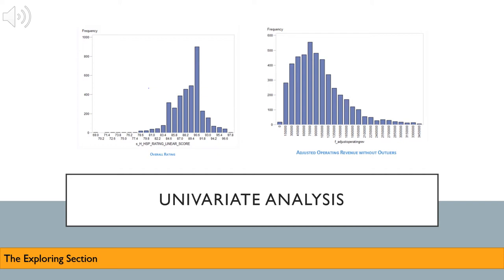In our exploring section, we looked at univariate analysis and bivariate analysis in order to come up with some hypotheses to use for our testing section. So based on our chosen hypothesis, our univariables are adjusted operating revenue and overall hospital rating. So adjusted operating revenue are earnings generated and accumulated before taxes and interest are taken out. Again, this is adjusted based on bed size.